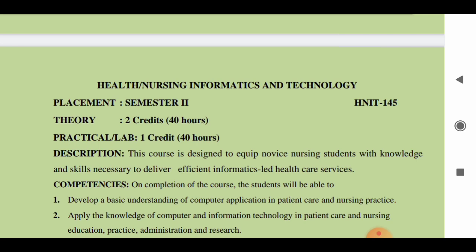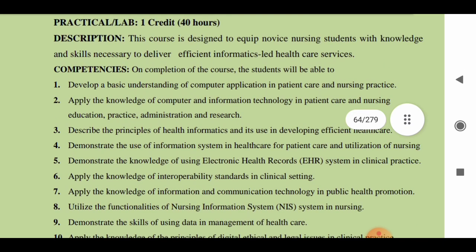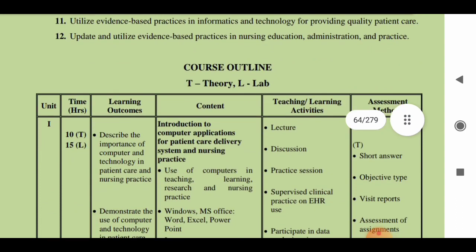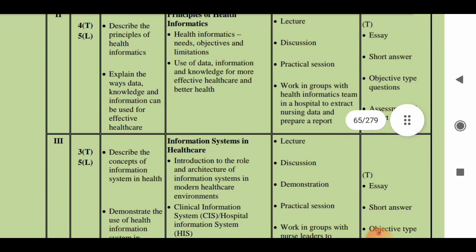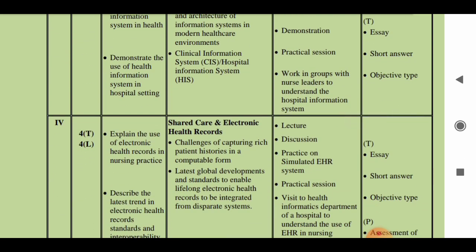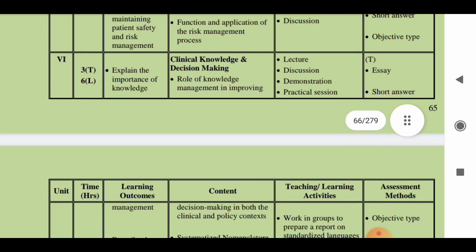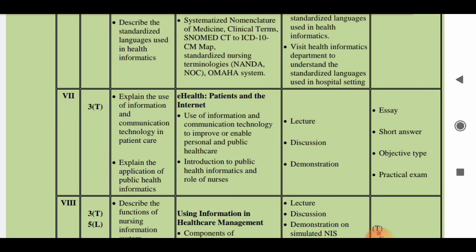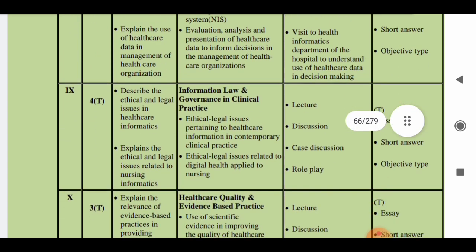The fourth subject is Nursing Informatics and Technology — two credits and 40 hours. Students will gain a basic understanding of computer applications in patient care and nursing practice. Topics include: introduction to computer applications for patient care delivery systems and nursing practice, principles of health informatics, information systems in healthcare, shared care and electronic health records, patient safety and clinical risk, clinical knowledge in decision making, e-health and the internet, and using information for healthcare management.